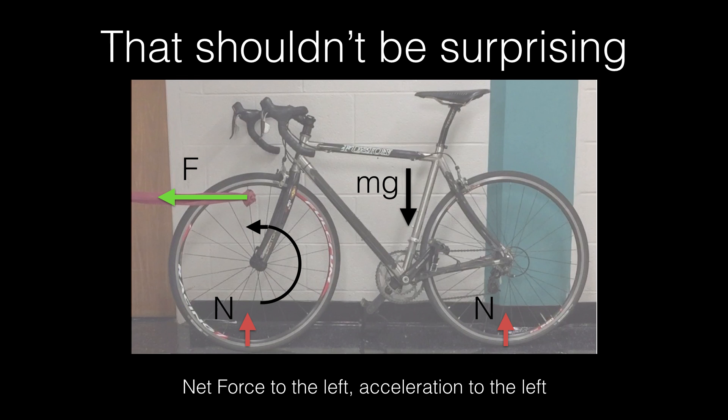Let's draw a free body diagram. So I have the force up here at the top. The wheel wants to rotate in the same way that force is pulling anyway. And then we have two normal forces from the ground and the gravitational force pulling down.